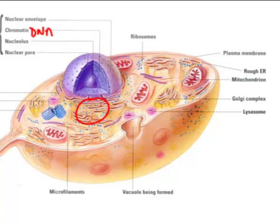The animal cell also has smooth endoplasmic reticulum, which doesn't have quite as many ribosomes on it. We also see that animal cells have mitochondria just like plants do — those are the little energy factories that do cellular respiration. But notice that animal cells do not have a chloroplast. That's strictly the domain of plants; animals don't have that.